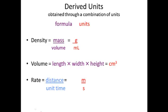Now, derived units are a combination of units. In purple, I'm showing you the formula for this unit. And in red will be the unit. So density is a unit that we use to describe the mass per volume. So typically, it's in grams for the mass. The volume is typically measured in milliliters.